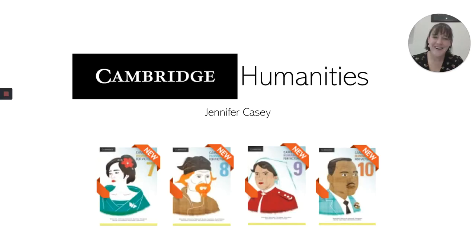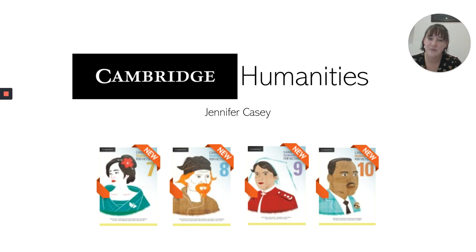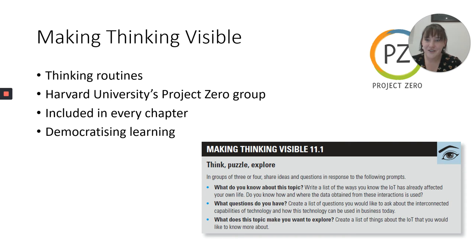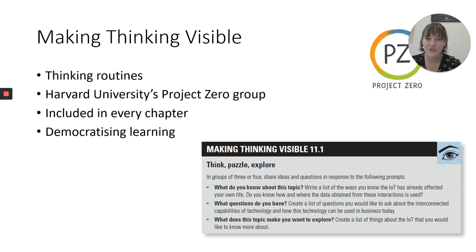Thank you, Michael. That was fabulous. I'm Jen Casey and it's an absolute pleasure to be here to speak about the new Cambridge Humanities Series. I'm going to speak about the visible thinking routines included throughout the series, particularly in relation to the economics and business and civics and citizenship sections. These thinking routines come from Harvard University's Project Zero group — I'd encourage you to visit the Harvard website to learn more. In short, visible thinking routines are engaging classroom activities which challenge students to reflect on and articulate their thinking about a prompt or source material, which is the core of so many of our subjects.